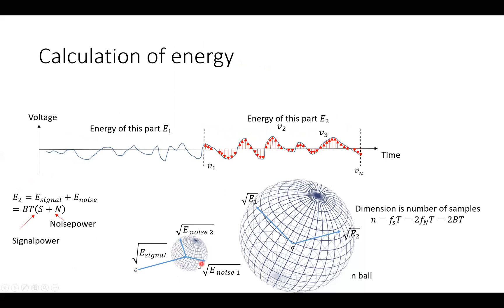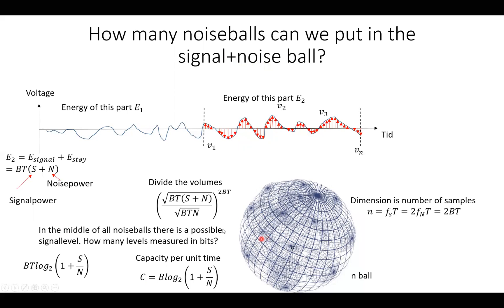So how many of these small balls can be put into this big ball? Well, then we just have to divide the volumes. Here is the volume of the signal plus noise ball divided by the noise ball. And here we see the dimension of the ball is 2BT.